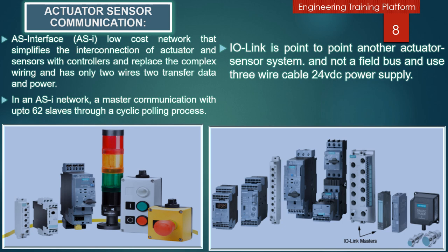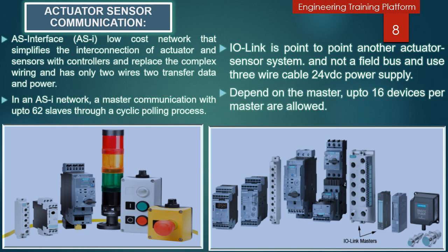IO-Link is another actuator sensor communication system. IO-Link is a point-to-point system, not a fieldbus. It uses a 3-wire cable, 24-volt DC power supply, and an IO-Link master. Depending on the master, up to 16 devices per master are allowed. The picture shows two examples of IO-Link masters and some of the many IO-Link slave devices that can be used with Siemens PLCs.